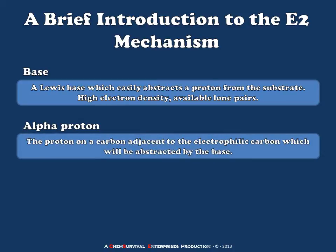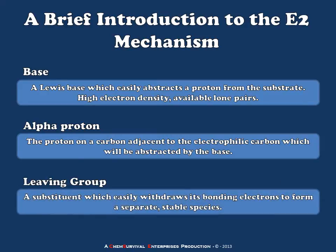Next is an alpha proton — that's the proton that's adjacent to a carbon that we're really interested in, in this case the electrophilic carbon. So alpha protons will be one carbon away from that site. And finally, the leaving group: the substituent which easily withdraws its bonding electrons, can let go of the electrophilic carbon, and essentially go off on its own to form a stable species.